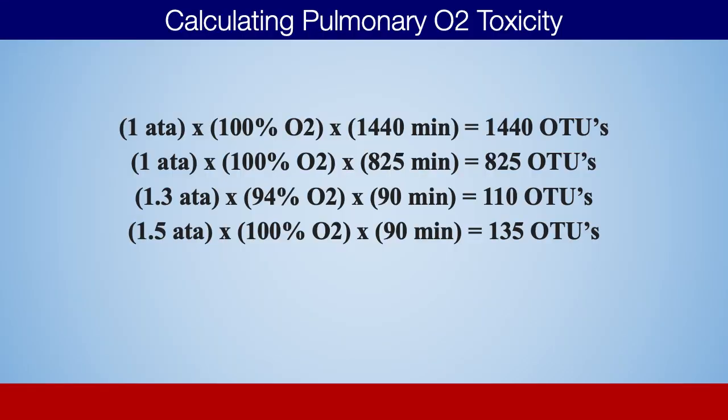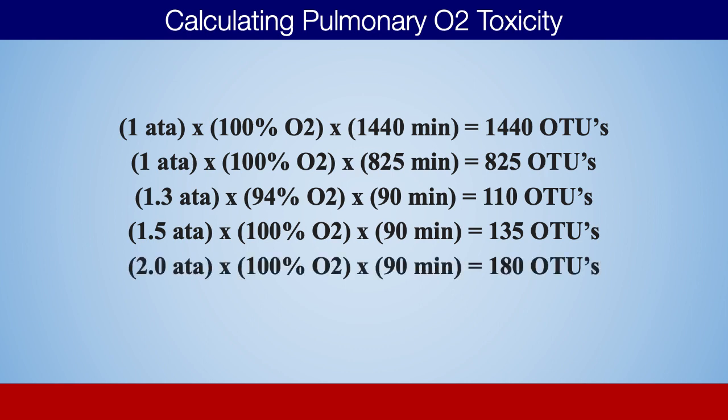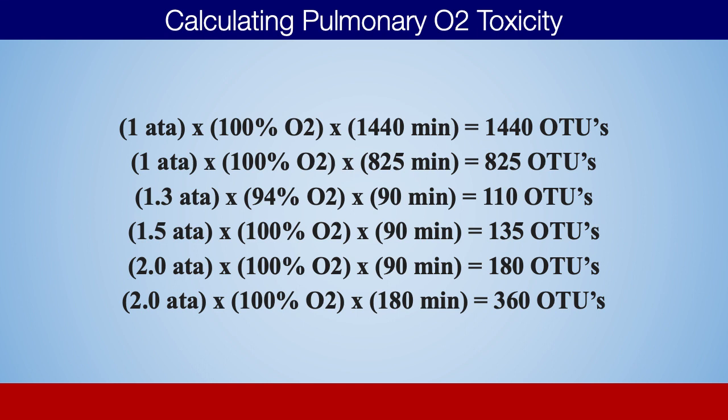At 1.5 atmospheres with 100% oxygen for 90 minutes, you're looking at 135 oxygen tolerance units. Going deeper to two atmospheres at 100% oxygen for 90 minutes — a long session at much higher pressure — you're still only at 180 oxygen tolerance units. Even doing double sessions, two atmospheres at 100% oxygen for 180 minutes in a day, you're still at only 360 oxygen tolerance units.